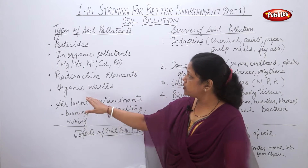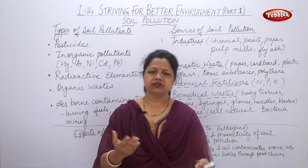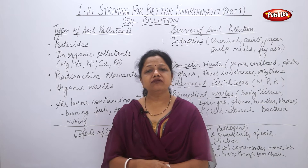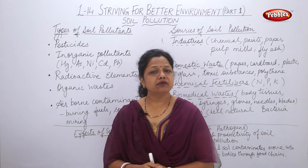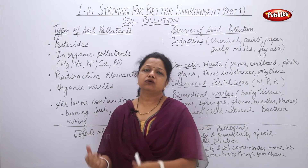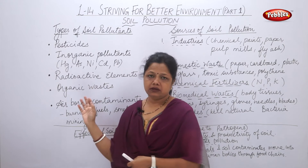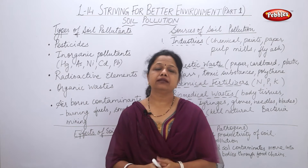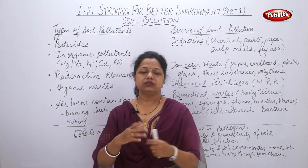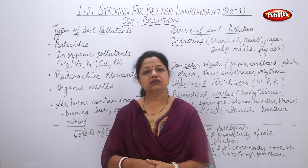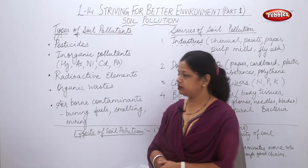The fourth type of soil pollutant is organic waste. Organic waste consists of sewage from the domestic sector, dead plants and animals from the agricultural sector, and burnt fuel. It also includes human waste, kitchen waste, and other household materials. So all of these form organic waste pollutants.